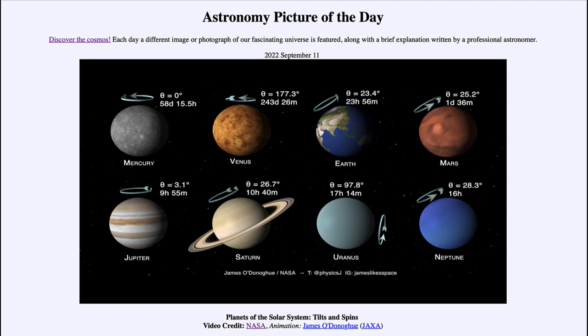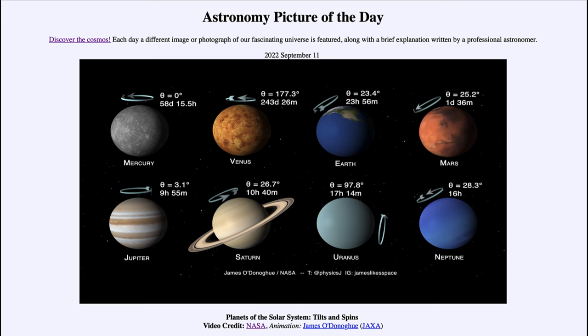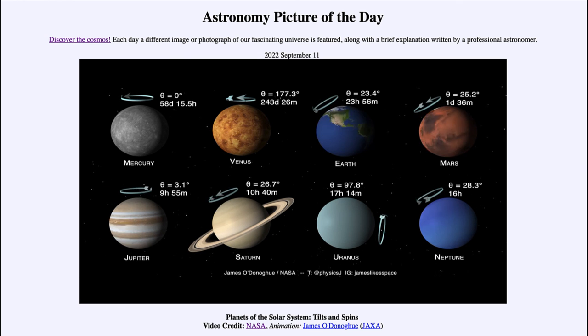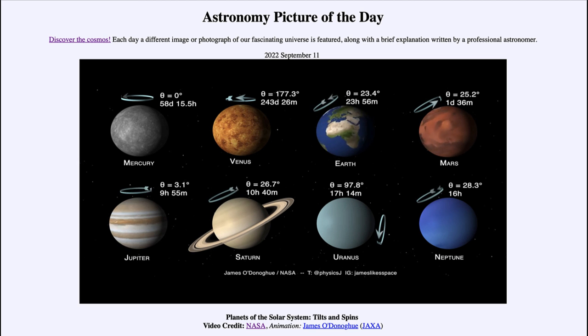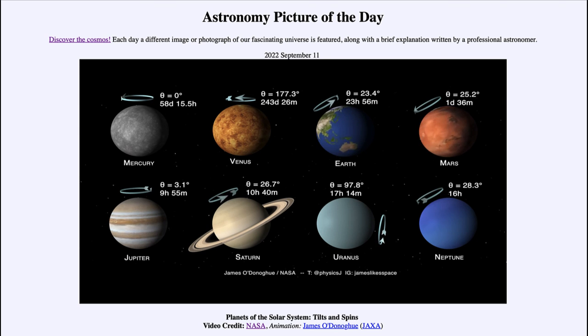That was our picture of the day for September 11th of 2022, titled Planets of the Solar System Tilts and Spins. We'll be back again tomorrow for the next picture, previewed to be Stars and Sprites. We'll see what that is about tomorrow, and until then have a great day everyone and I will see you in class.